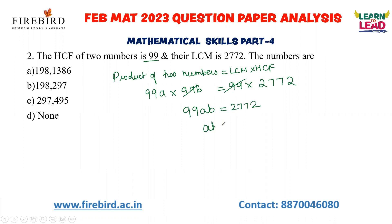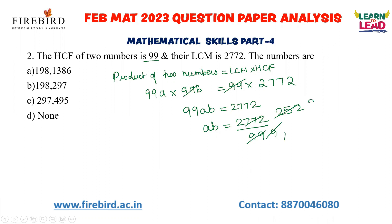So A × B = 2772 ÷ 99. Cancelling in terms of the 11 table gives 252, and cancelling again in terms of the 9 table gives 28. So if you multiply A × B, you should get the answer as 28.